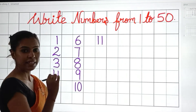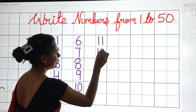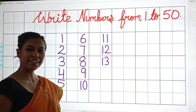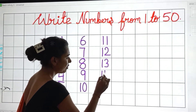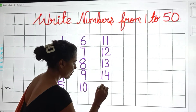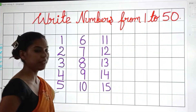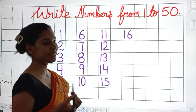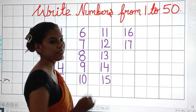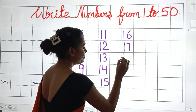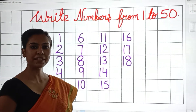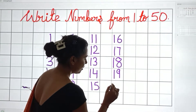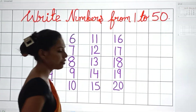1, 1 — 11. 1, 2 — 12. 1, 3 — 13. 1, 4 — 14. 1, 5 — 15. 1, 6 — 16. 1, 7 — 17. 1, 8 — 18. 1, 9 — 19. 2, 0 — 20.